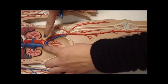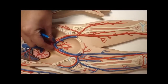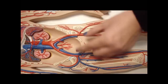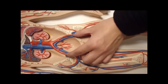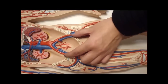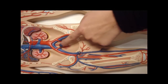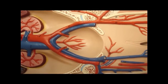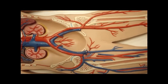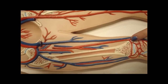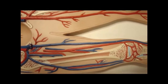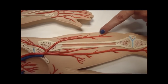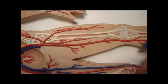We have the common iliac artery, which is the V-shape right here. Then you have the external iliac artery, which is over here — the red one. Then you have the internal iliac artery, which is the red inside — the little red guys in there. Then you have the femoral artery, which is the red one of course. Then you have the deep femoral artery, which is this one right over here — it's away from the body. And then you have the popliteal artery, which is the patella artery.